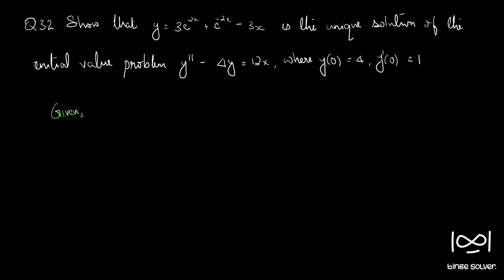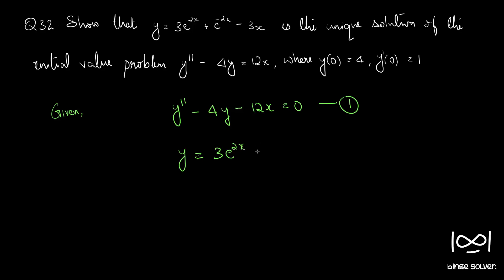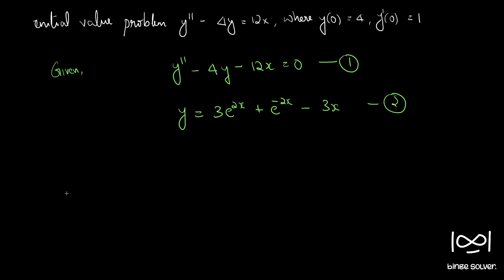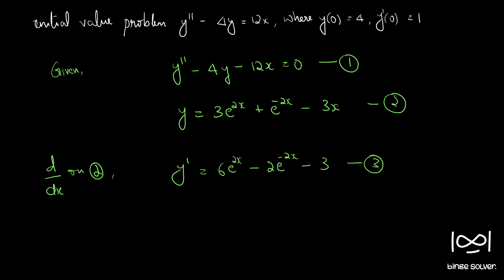So, noting down the givens: y'' - 4y - 12x = 0 is equation 1. Now y = 3e^(2x) + e^(-2x) - 3x is our given relation (equation 2). Taking d/dx, we get y' = 6e^(2x) - 2e^(-2x) - 3. This is equation 3.